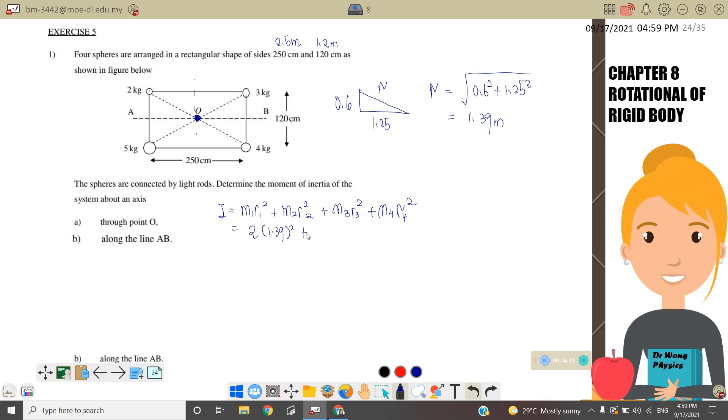We substitute into the equation: 2 kg times 1.39 square plus M2 is 3 kg, distance is also 1.39 square, then 4 kg times 1.39 square plus 5 kg times 1.39 square. Therefore, I through point A equals 27 kg meter square.